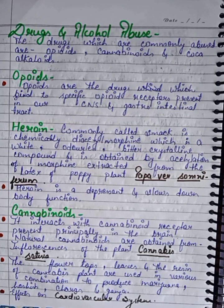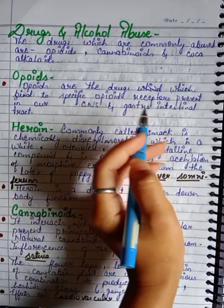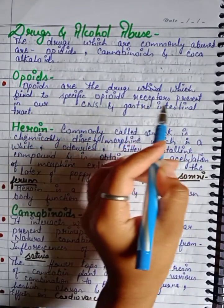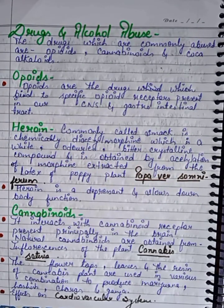The drugs commonly found in the market include opioids, cannabinoids, and coca alkaloids. First, opioids are drugs which bind to specific opioid receptors present in our central nervous system and gastrointestinal tract.